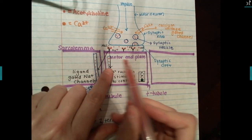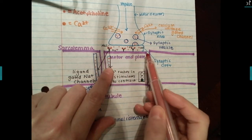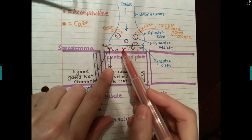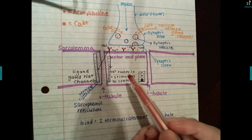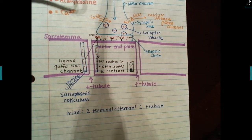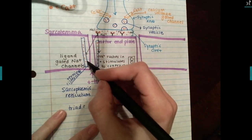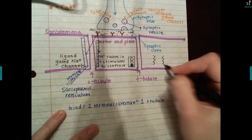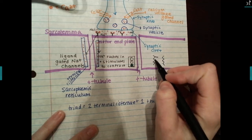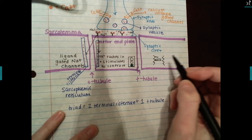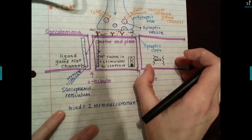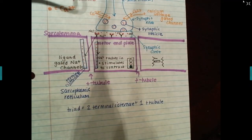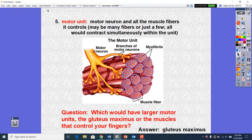The motor end plate is just a bracketed, specialized area of the sarcolemma where the motor neuron connects to the muscle fiber. Also within the muscle fiber you've got all the sarcomere components. The sarcomere is very concentrated inside that fiber, so along with the terminal cisternae you'd have your sarcomere running from z-disc to z-disc, with actin attached and myosin situated in the center.